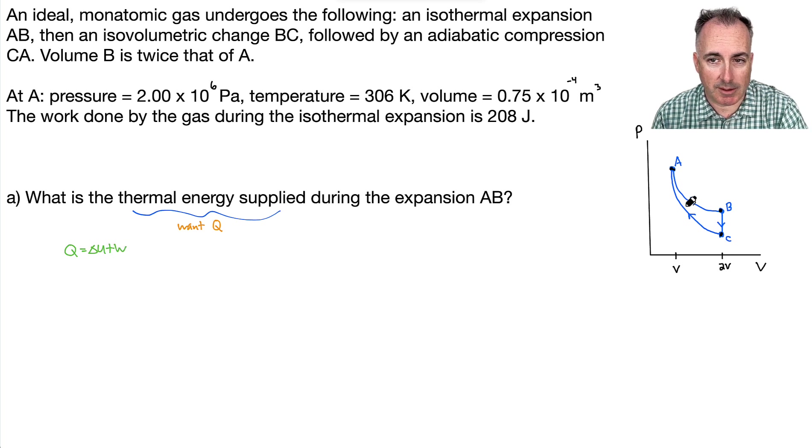That's that Q equals delta U plus W. So to go from A, B, remember, we're just caring about that. From A to B, we need to know delta U, and we need to know W, and from then we can then know Q. Well, do we know what delta U is? It turns out we do. See, this is a really important thing. We know that delta U is going to be zero. Why?